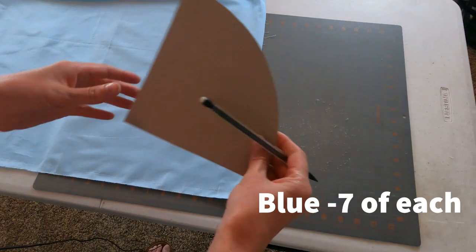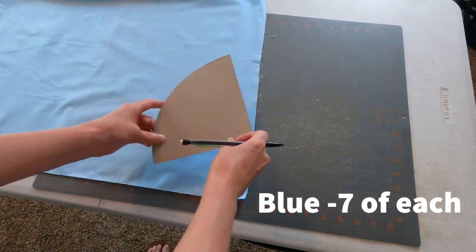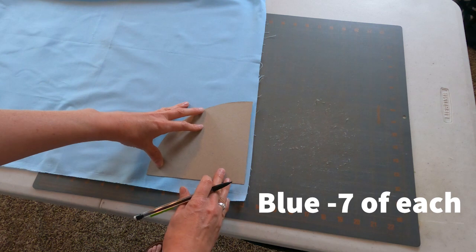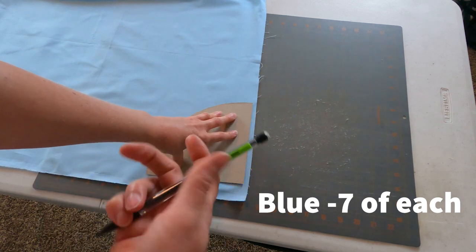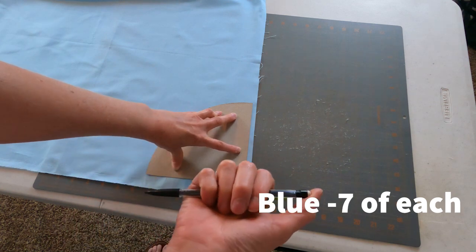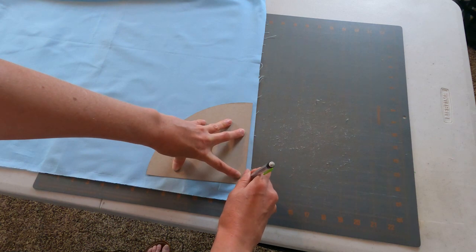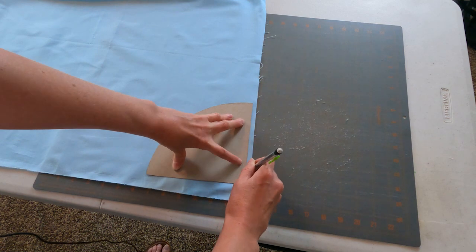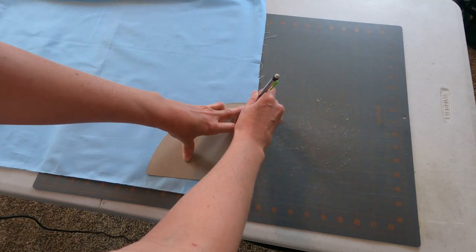Now that we've got our template cut out of our cardboard, we can go ahead and use this on our fabric. So we can lay it directly on our fabric. And then you can go ahead and grab a pencil. Works just great. You can grab a fabric marking pen or whatever you have handy. Chalk also works as well. And we're going to just trace this template onto the fabric.